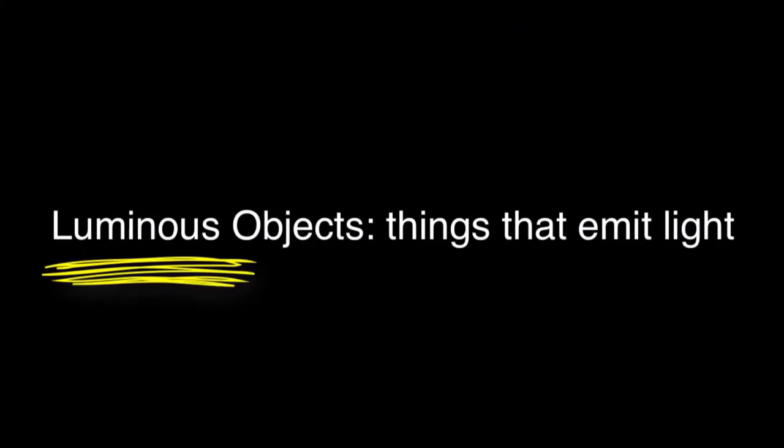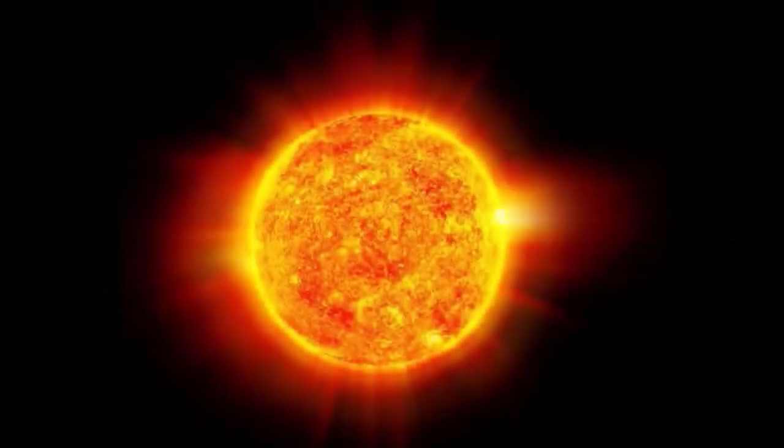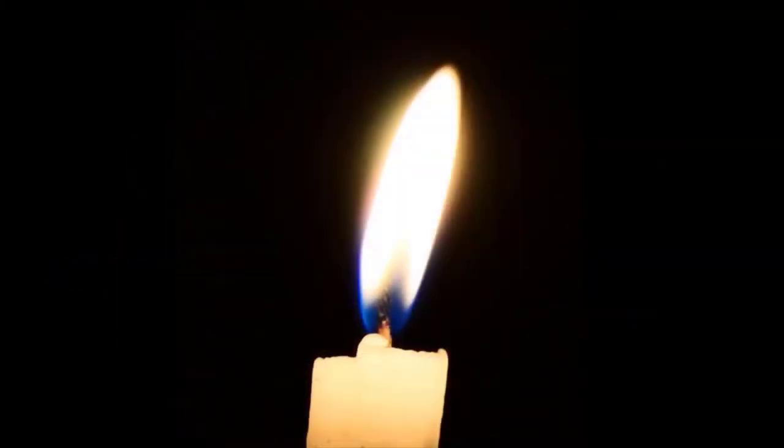We know that light is emitted from objects called luminous objects. Examples are the sun, a flame, and the filament of a light bulb.